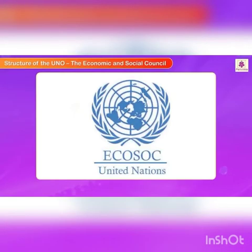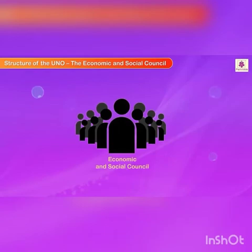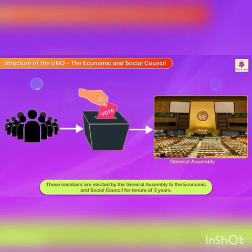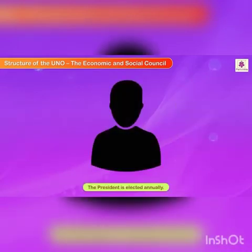The Economic and Social Council: The Council works towards social and economic progress and development. It has a total of 54 members who are elected by the General Assembly to the Economic and Social Council for a tenure of three years. The President is elected annually.